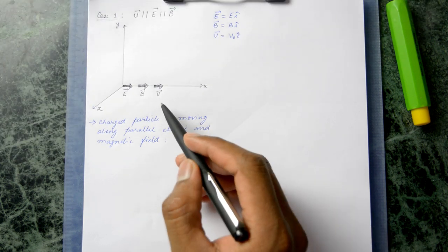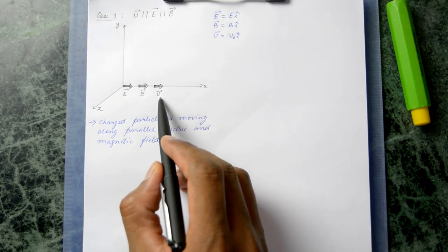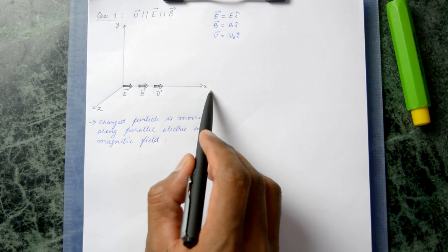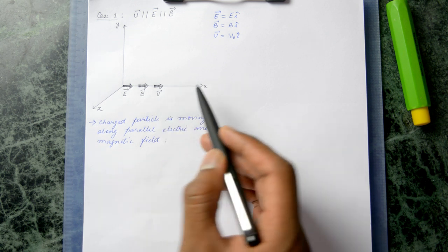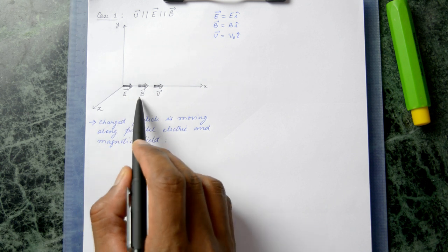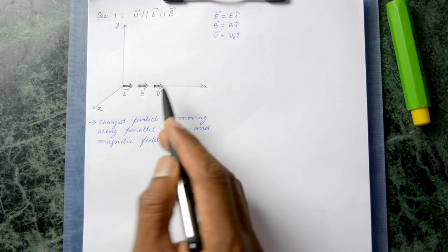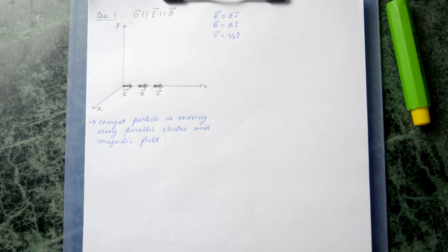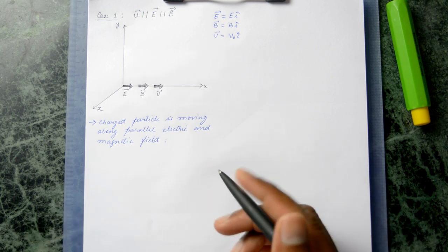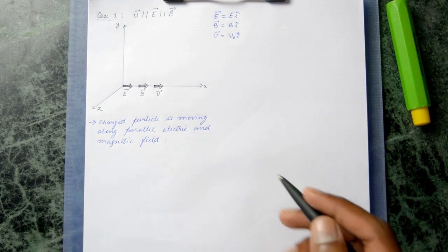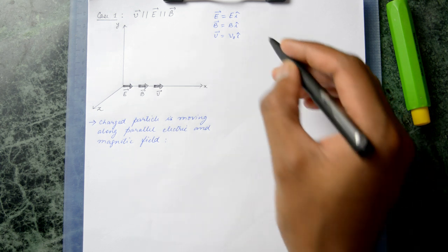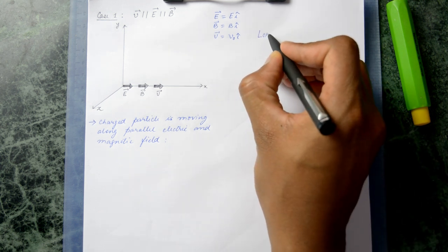In case number one, the particle is moving with velocity V along the x-axis, parallel to an external electric field as well as a magnetic field which are also parallel to each other. When a charged particle is in the presence of an external electric as well as a magnetic field, the nature of the force is given by the Lorentz force law.